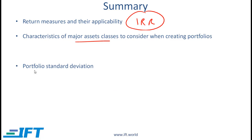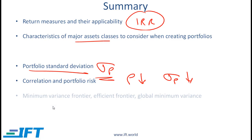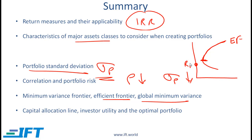Regarding risk of a portfolio: the portfolio standard deviation is a measure of risk and you must know the formula for computing it. On correlation and portfolio risk: as the correlation between assets decreases, the portfolio risk goes down. We covered the minimum variance frontier, the efficient frontier, and the global minimum variance portfolio. The minimum variance frontier gives you the lowest variance for a given level of return; the global minimum variance is the lowest overall; and the points above it represent the efficient frontier. We then talked about the capital allocation line, which connects the risk-free asset with the efficient frontier.